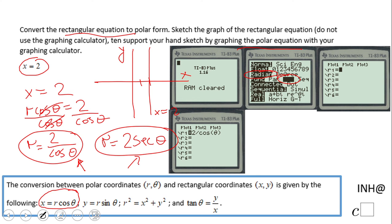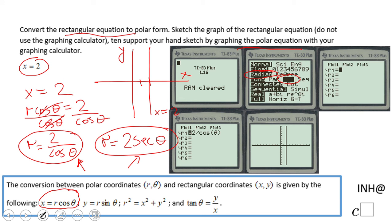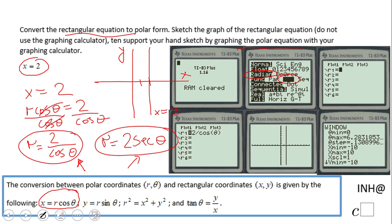And there you go, the graph is a line of x equals 2. If you do not see that, you might want to look at your window. Notice 0 to 6.3, that is 2 pi, just as an idea, and yes we are okay.